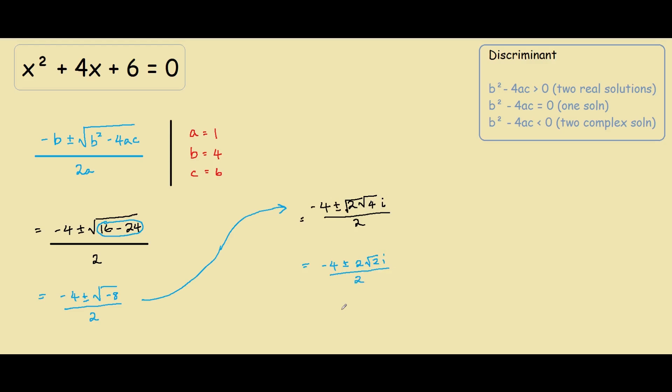And our last step, divide everything by 2, so negative 2 plus minus square root of 2i. So our two complex solutions are negative 2 plus square root of 2i, and negative 2 minus square root of 2i.